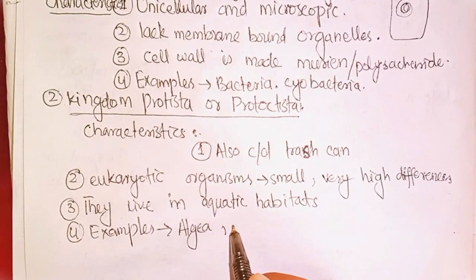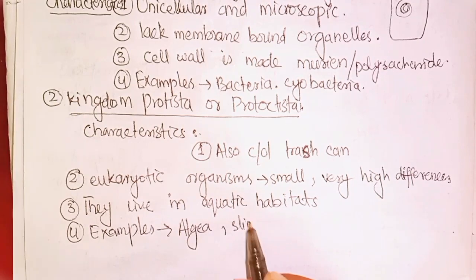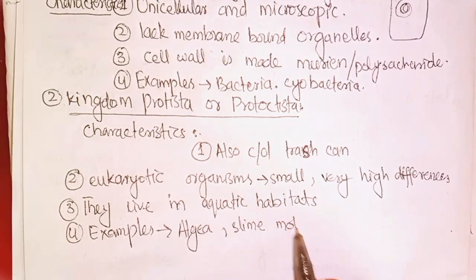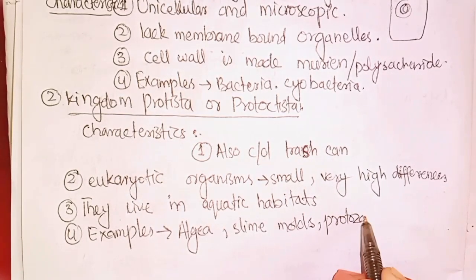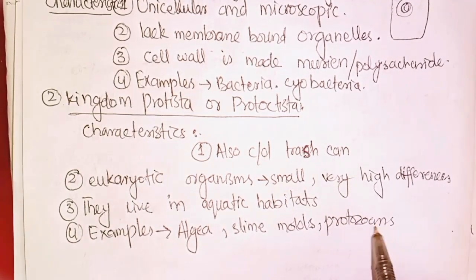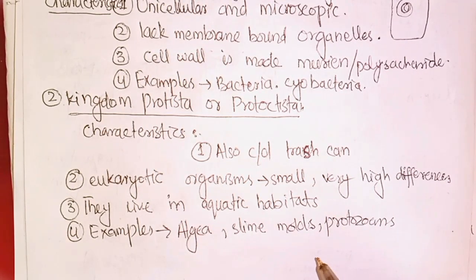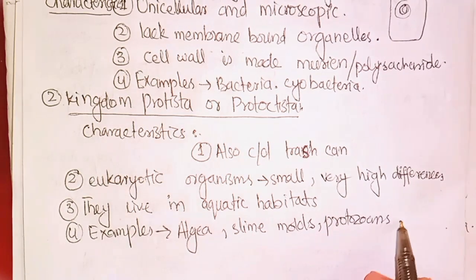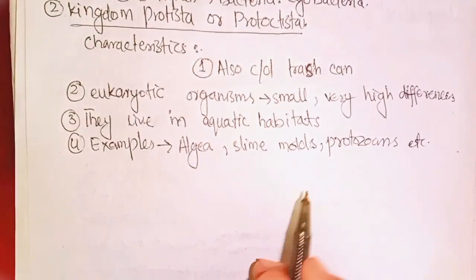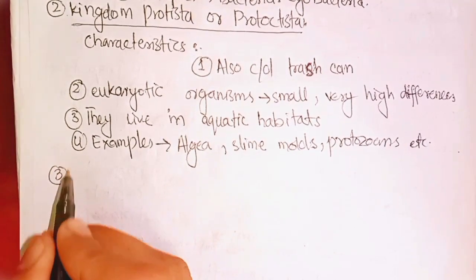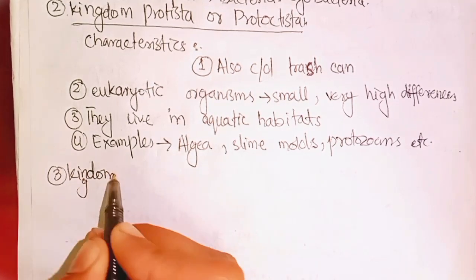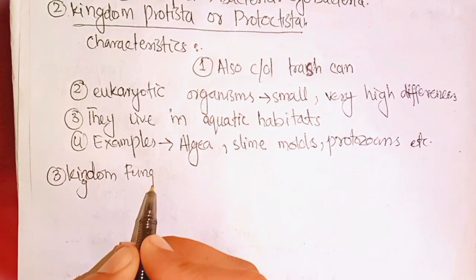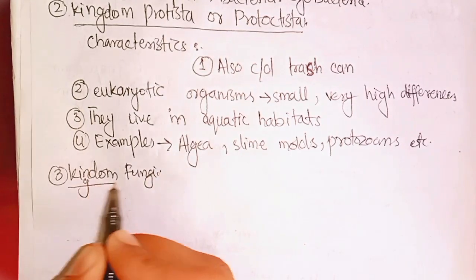Examples of Kingdom Protista include the slime molds, protozoans, and the amoeba.